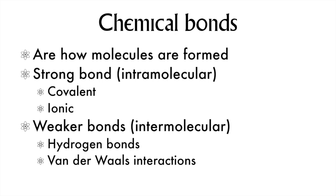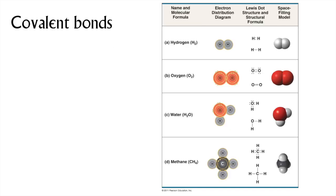There are a few different ways for atoms to interact to form molecules. Within a molecule, there are covalent and ionic bonds. Molecules can also interact with each other through hydrogen bonds and van der Waals interactions. In a covalent bond, two atoms share a pair of electrons. This pair sharing completes the valence shell for both atoms. In hydrogen gas, the two hydrogen atoms share one pair of electrons, and both atoms feel like they have two electrons, completing the 1s orbital.